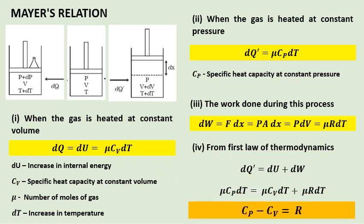So, the terms mu and dT are common in each term. We cancel them, and finally we get Mayer's relation: Cp minus Cv equals R.